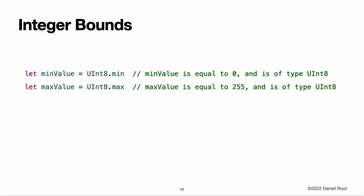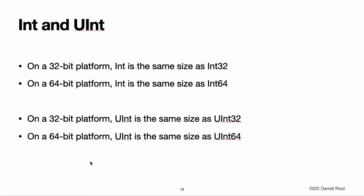In most cases, you do not need to pick a specific size of integer to use in your code. Swift provides an additional integer type, Int, which has the same size as the current platform's native word size. On a 32-bit platform, Int is the same size as Int32. On a 64-bit platform, Int is the same size as Int64. Unless you need to work with a specific size of integer, always use Int for integer values in your code. This aids code consistency and interoperability. Even on 32-bit platforms, Int can store any value between negative 2.1 billion and positive 2.1 billion, and is large enough for many integer ranges.